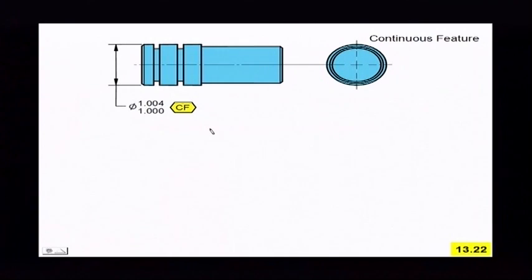All right, continuous feature. This is what it's used for. It's used on usually diameters that are all coaxial like this, and what they did is they just maybe have some grooves cut in.